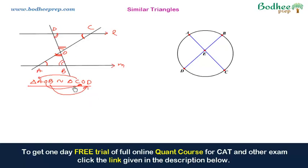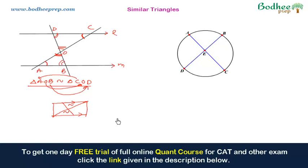Such scenarios arise in many cases — for example, a rectangle where there is a cross. Since opposite sides of a rectangle are parallel, the two triangles formed will be similar. Similarly, this applies to a parallelogram, trapezium, or any other quadrilateral where the opposite sides are parallel and there is a cross between them, so we apply similar triangles in such questions.